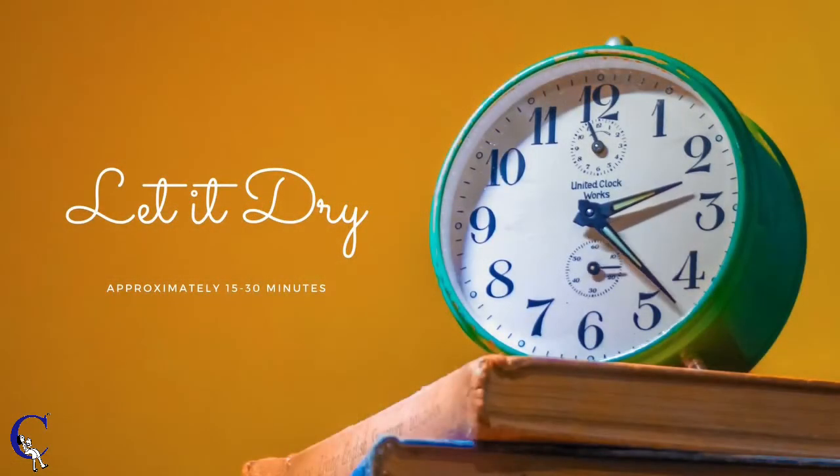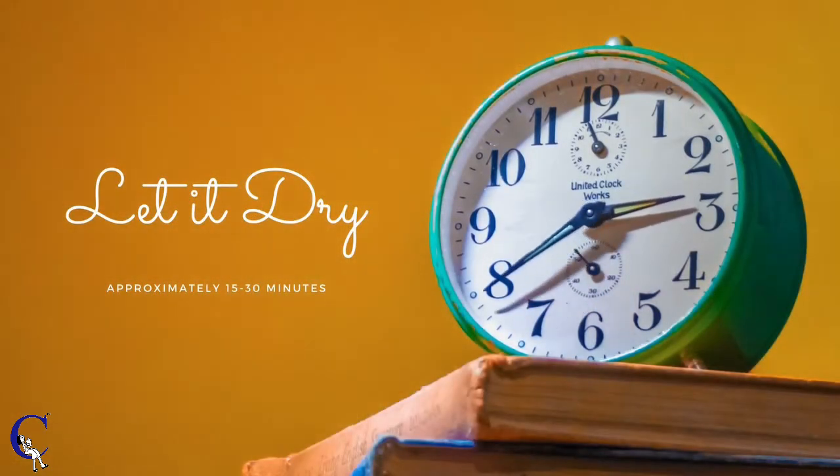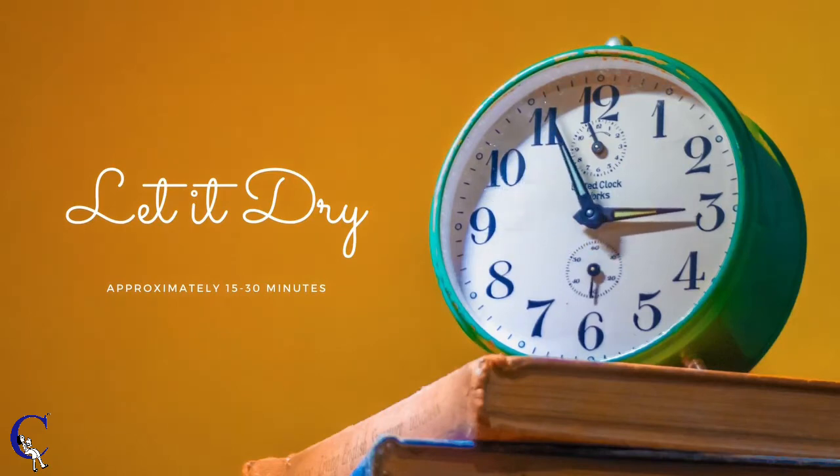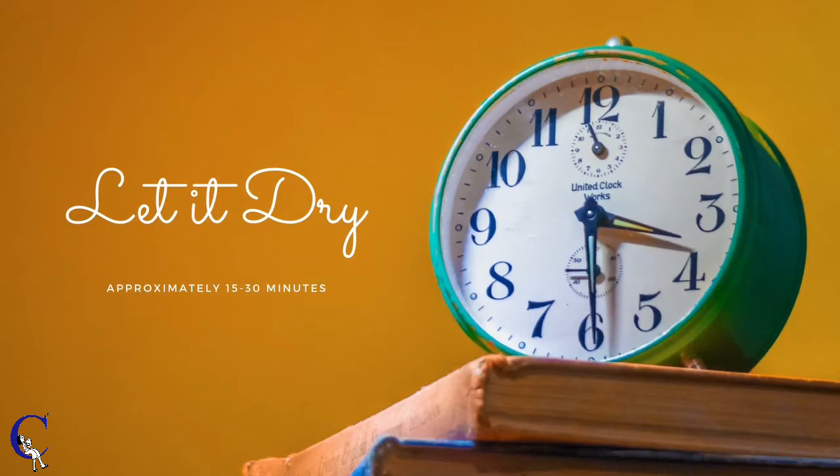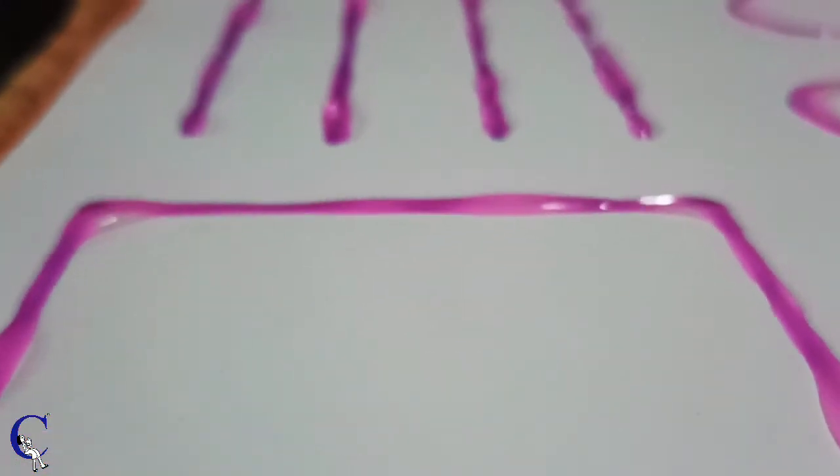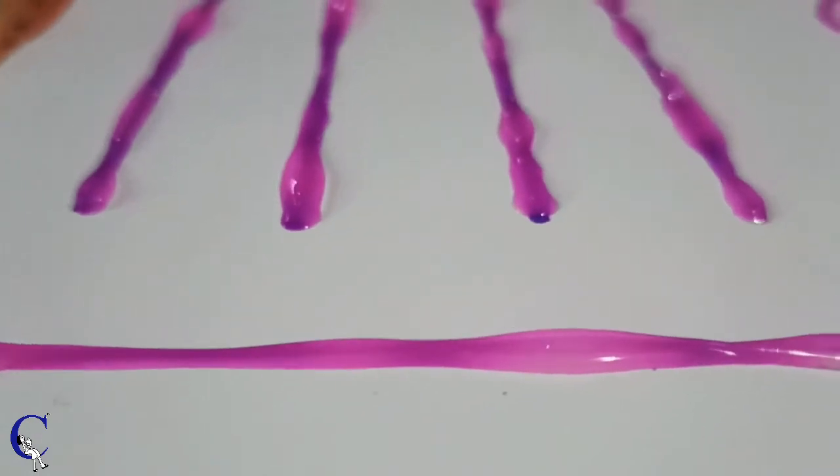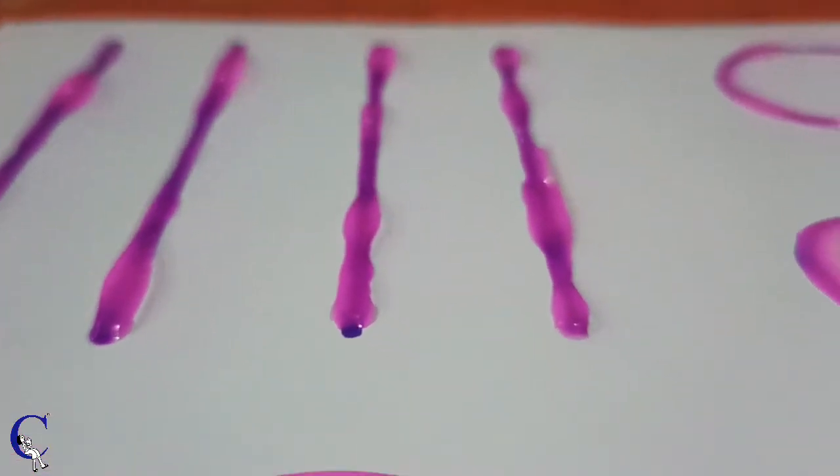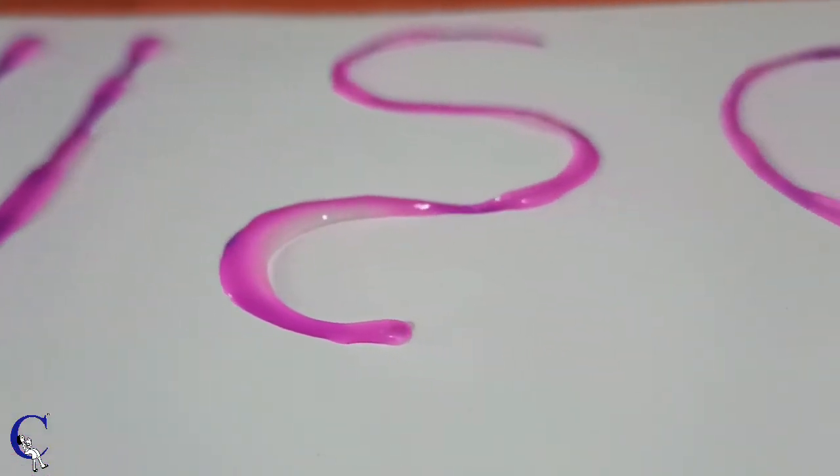Let your paper dry for a little while. It would take around 15 to 30 minutes for it to be completely dry. It is important to keep your paper in a dust free zone. This is what it would look like when your drawing is completely dry. The glue is now transparent and you can see the marker drawings below.